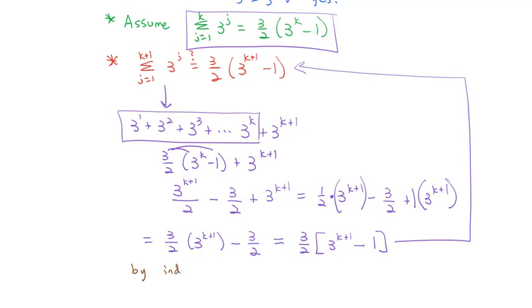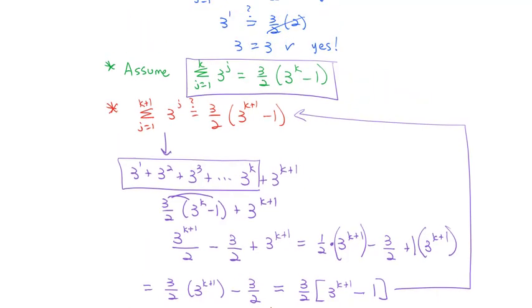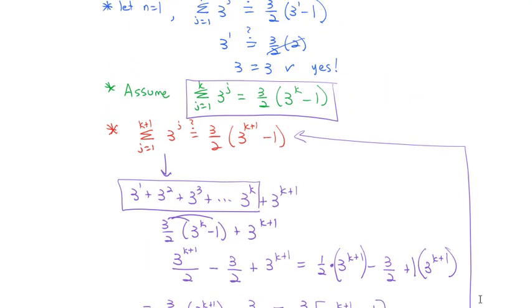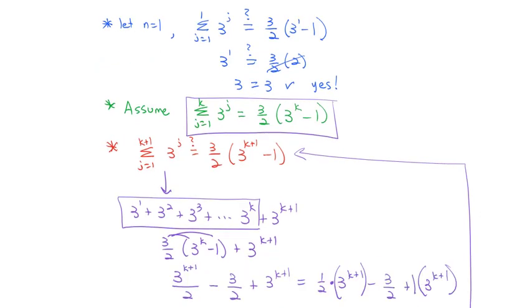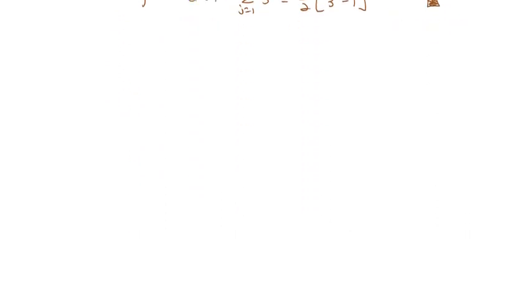By induction, the sum as j goes from 1 to n of 3 to the j equals 3 halves times 3 to the n minus 1. We can use a solid box or QED to finish our proof. The process was still exactly the same: base case, assume the k case, prove the k plus 1. That last step is where we do the most work because that's the algebraic manipulation — it's going to be different on every single problem, but that's where we bring together everything we know about algebra.